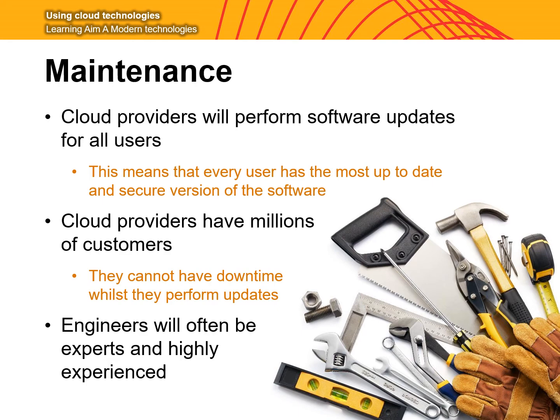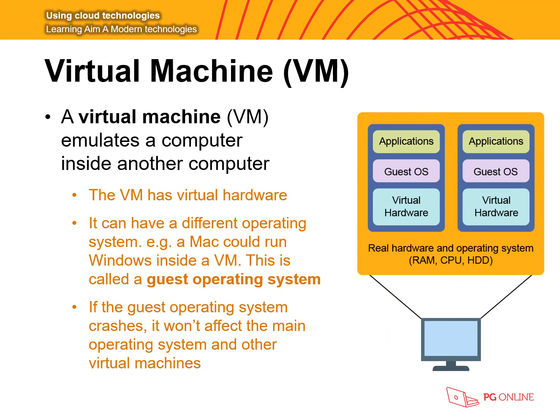We're now going to look at virtual machines. A virtual machine emulates or pretends to be a computer inside another computer, with its own virtual hardware setup. It can also run different operating systems — for example, your Mac could have Windows software installed and operating inside the virtual machine, called a guest operating system. If the guest operating system crashes, it won't affect the main operating system or other virtual machines. We will look at how virtual machines are used for penetration testing when we cover system security in future topics.